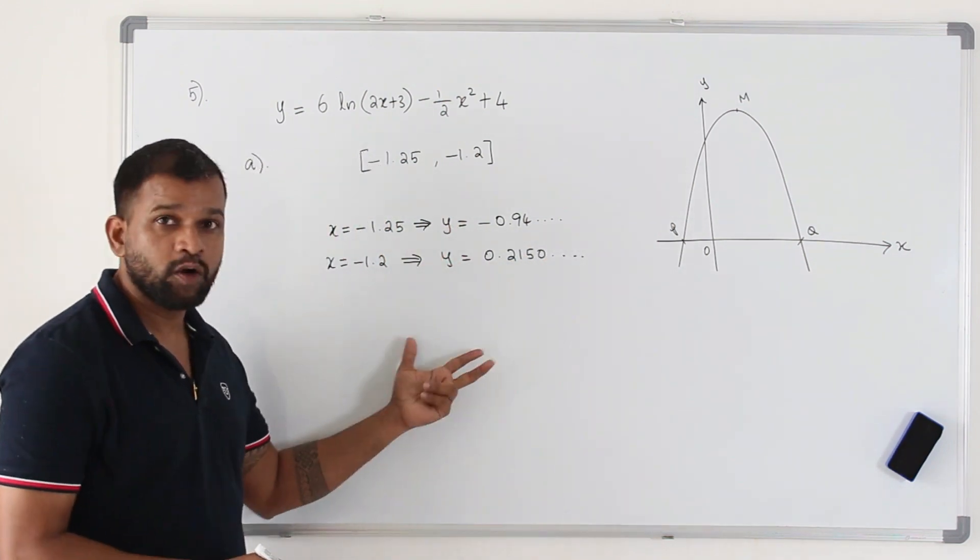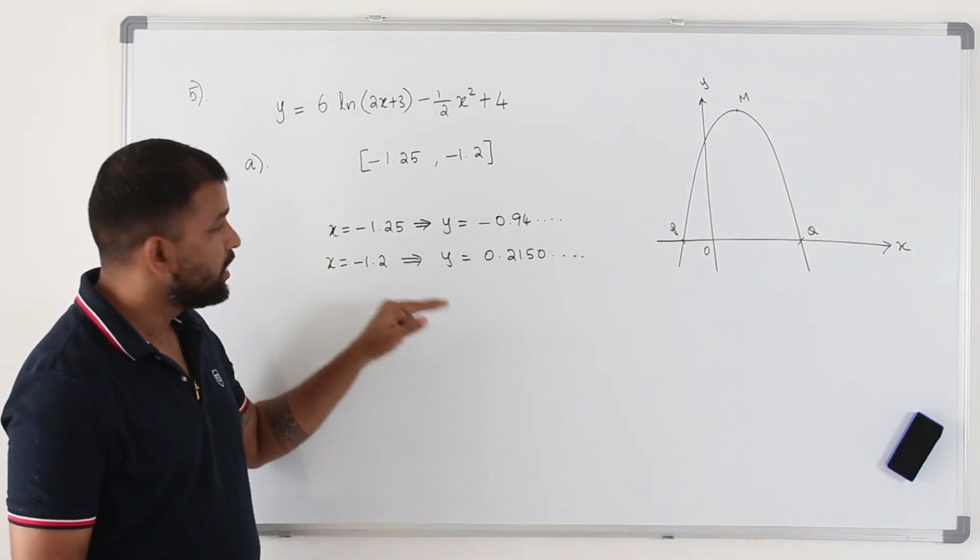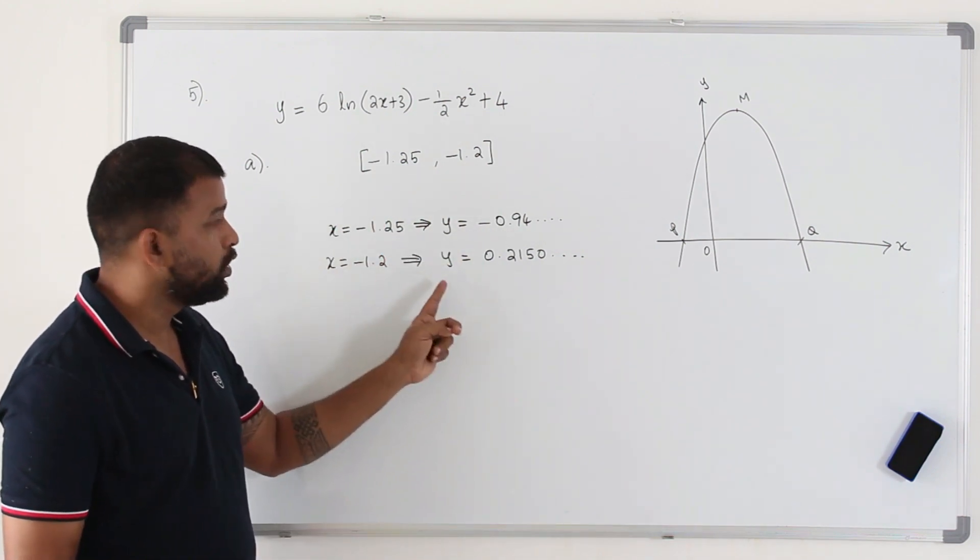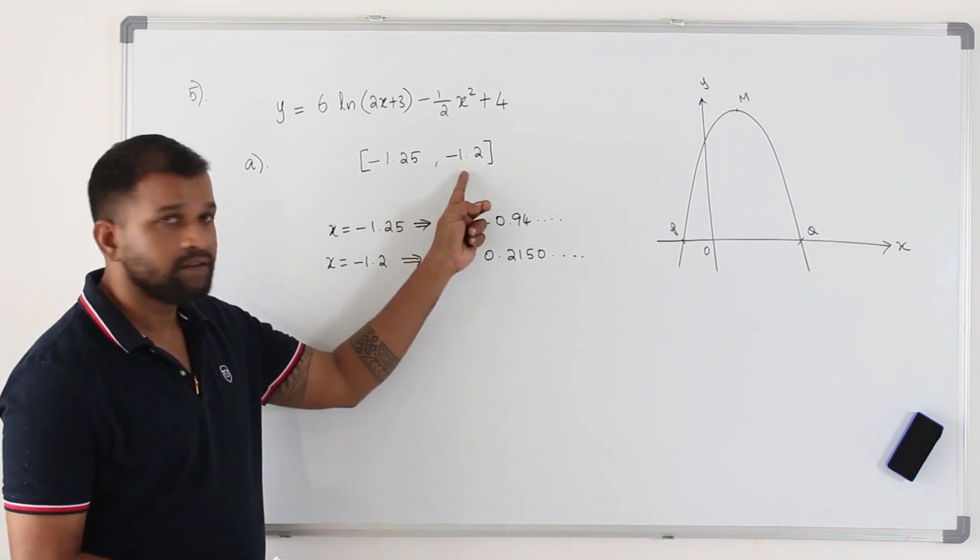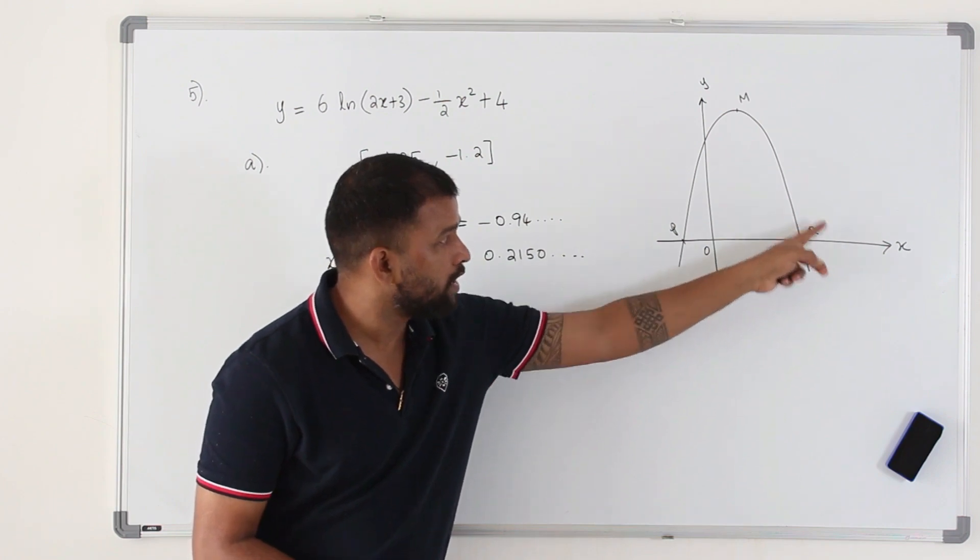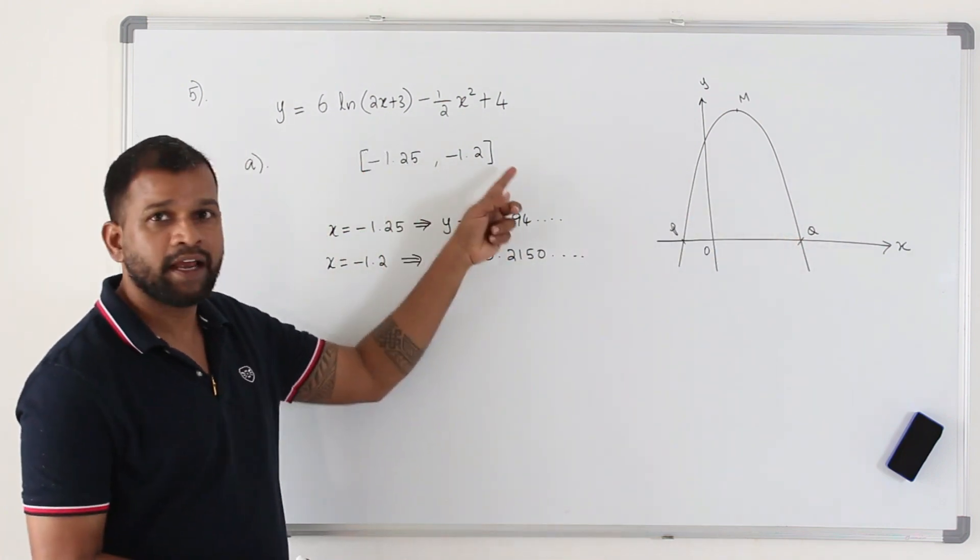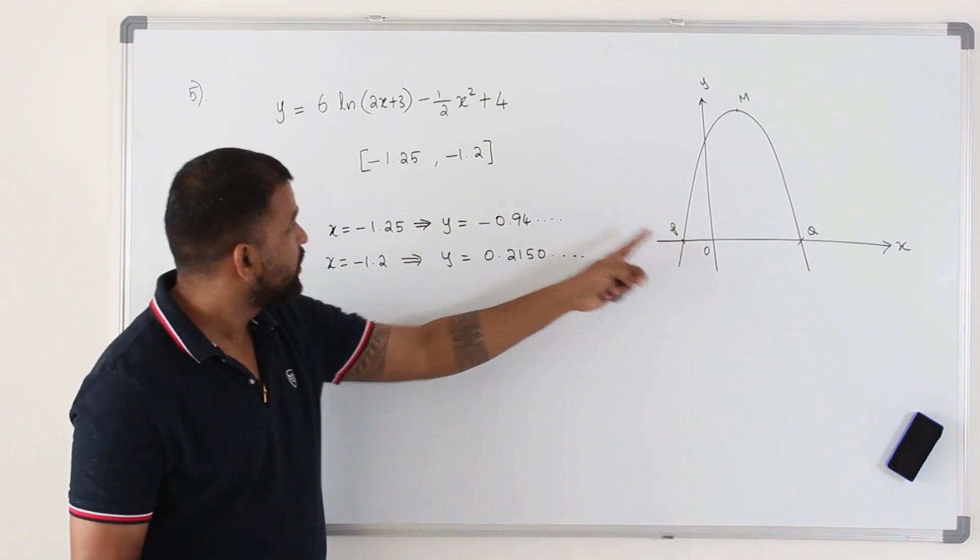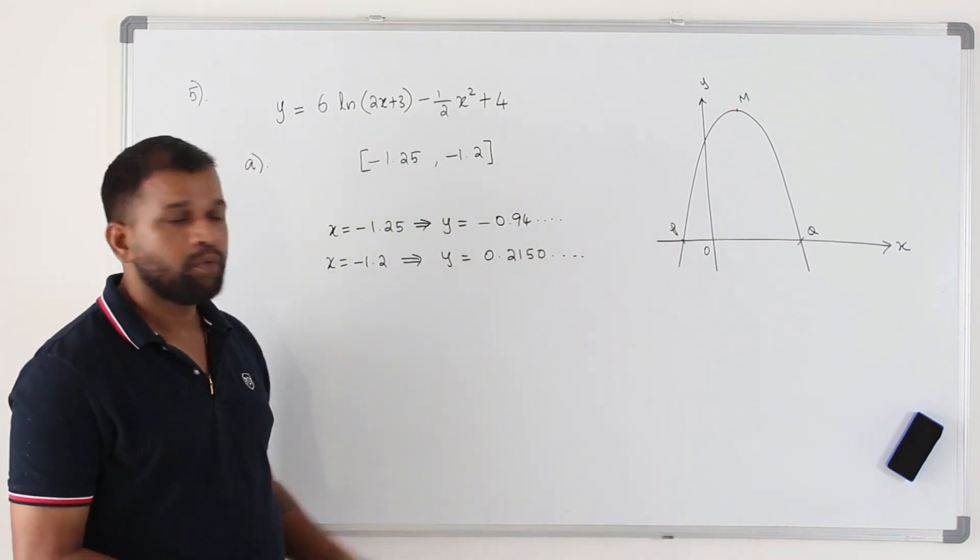So you need to write the conclusive steps. There is a change of sign. Therefore, there exists a root between these two points. Definitely, it won't be Q because for Q, the x-values will be positive. These two values are negative. So definitely, the x-coordinate of P lies between these two points.